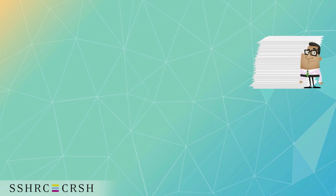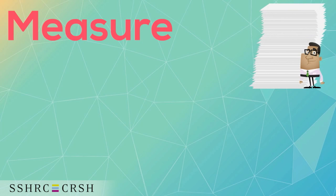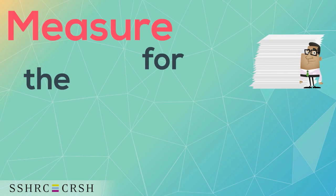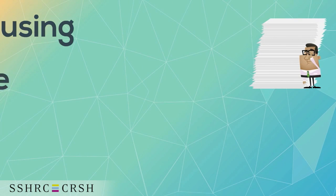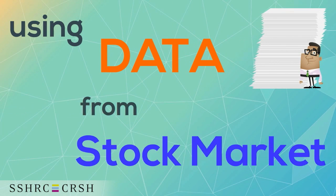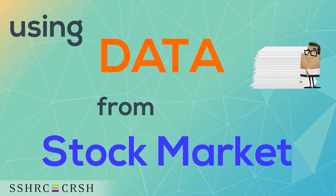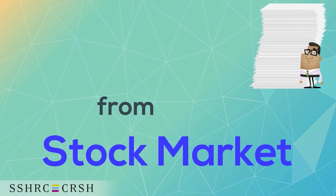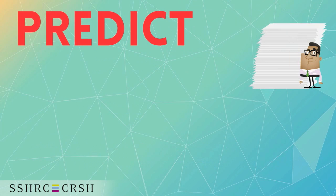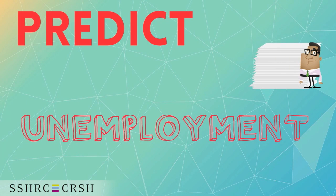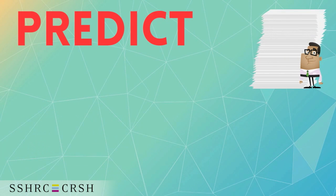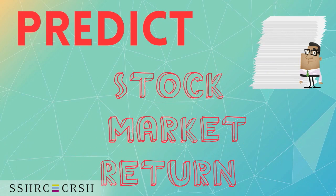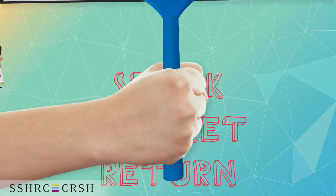In this project, we introduce a measure for sectoral reallocation shocks using data from the stock market. We show that this measure can not only predict future unemployment over different horizons, but also has a remarkable predictive power for stock market returns.